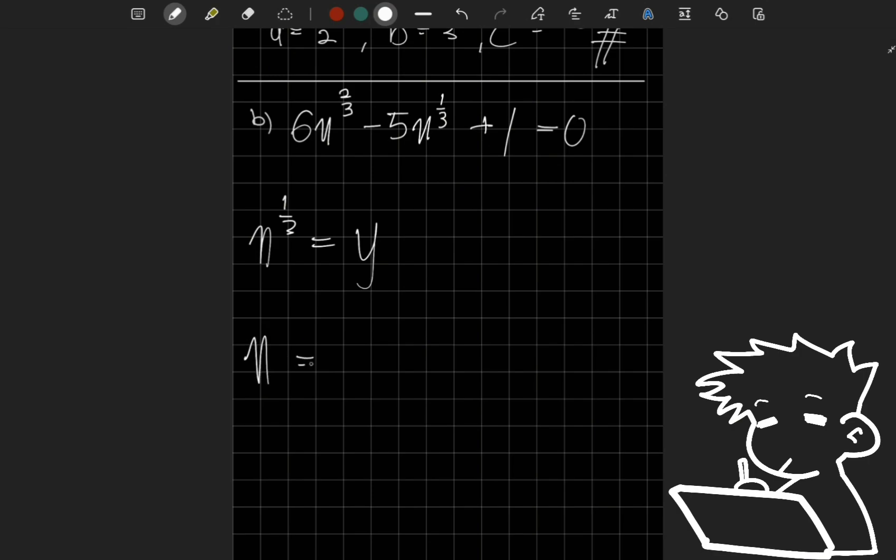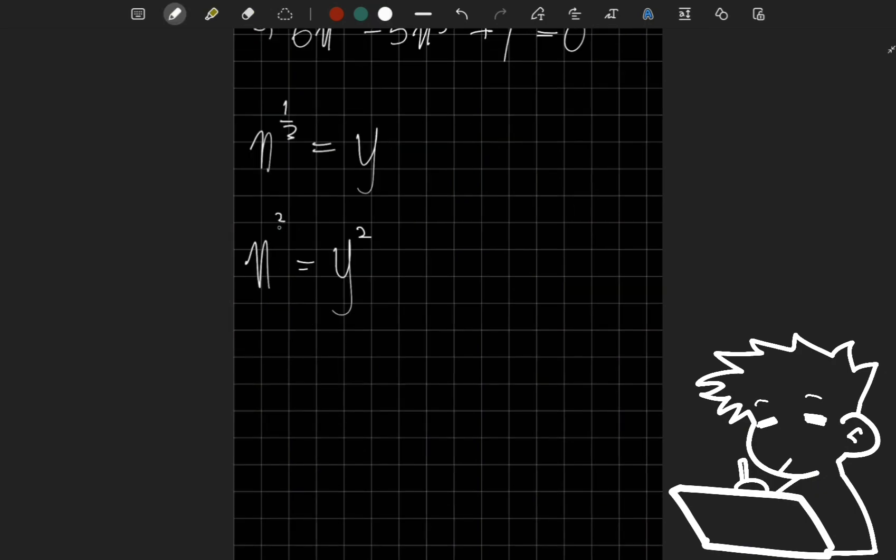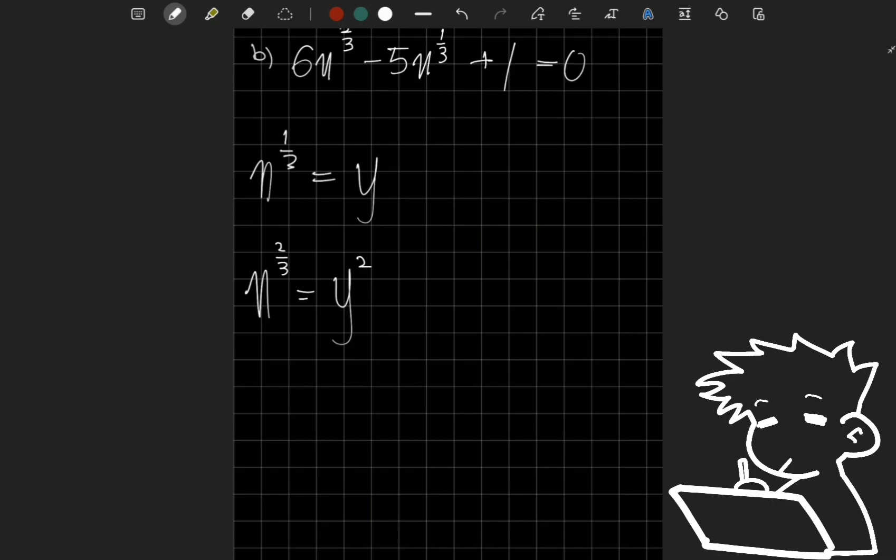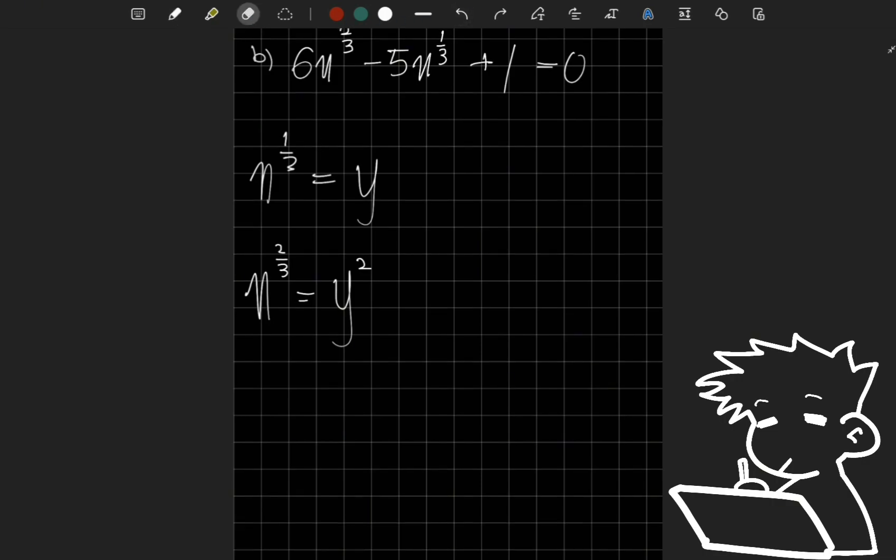We're gonna change the subject to Y. I guess you could also put this in a calculator, but that's not how you're gonna show it. Why do I do this as Y? Because if I make Y squared, X to the power of 1 over 3 is going to square also, which is going to be X to the power of 2 over 3. See how simple is that? We just use substitution. Alright ladies and gentlemen, let's just continue on with the question. So I do Y equals X to the power of 1 over 3. So 6Y squared minus 5Y plus 1.